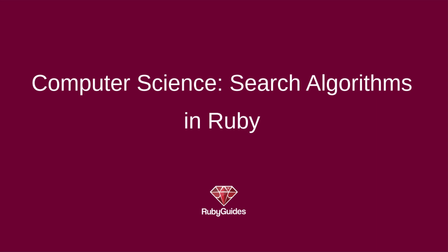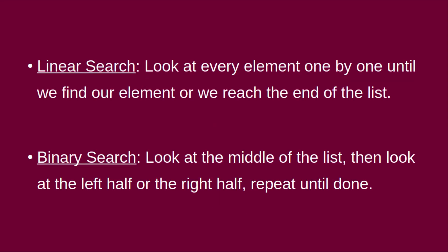Search algorithms are a kind of algorithm used to search something, like the name says — you're searching for a specific number inside a list, or a character inside a string. These are search algorithms. Typically we do this with arrays in Ruby, and there are two kinds: linear search and binary search.